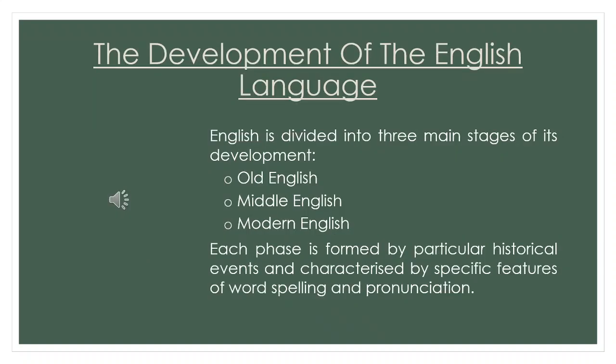Let's look at the development of the English language. English is divided into three main stages: Old English, Middle English, and Modern English. Each phase is formed by particular historical events and characterized by specific features of word spelling and pronunciation. Now you will listen to an audio file where you can find out more about the development of English.